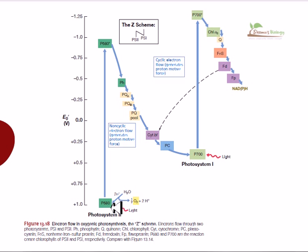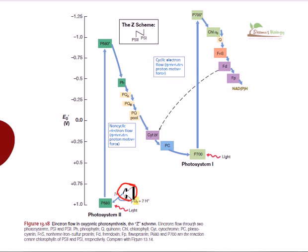Light hits photosystem II and it gets excited, but it does not have electrons on its own — it needs an electron donor. The electron donor for photosystem II is water. The water molecule is broken down into oxygen plus hydrogen, and two electrons are donated to photosystem II, which is the P680 complex.